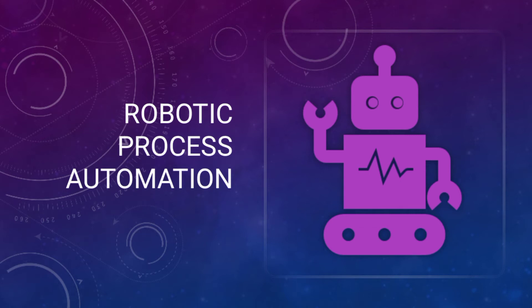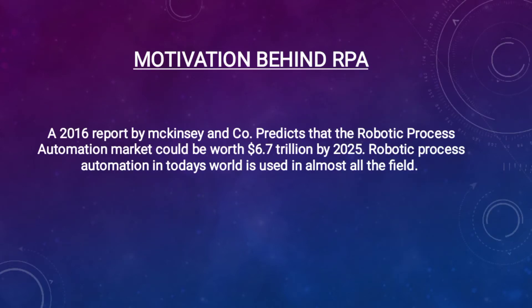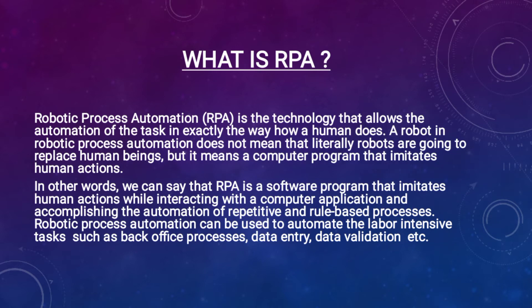The topic is robotic process automation. The main motivation behind RPA is the shortage of IT resources, which leads business departments to build things on their own — making business departments independent of IT resources.